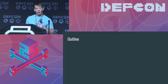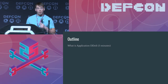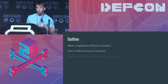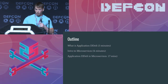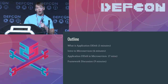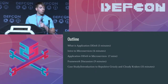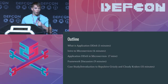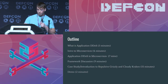That's really the ethos of the talk today. We're going to present why application denial of service attacks matter and why they're extremely relevant in microservice architectures. We'll start by explaining what application DDoS is, then do an introduction to microservices. We'll talk about application DDoS in microservices, walk through a framework we've developed, do a case study on netflix.com, and introduce two tools we're open sourcing today: Repulsive Grizzly, our application DDoS framework, and Cloudy Kraken, our AWS red teaming orchestration framework. We'll then do a demo and discuss mitigation strategies and future work ideas.